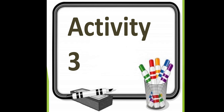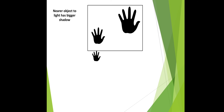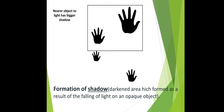Activity 3: Formation of shadow. A shadow is a darkened area formed as a result of light falling on an opaque object. When you move nearer to the light source, the shadow becomes bigger; when you move farther away, the shadow becomes smaller. Shadows form because light travels in a straight line.